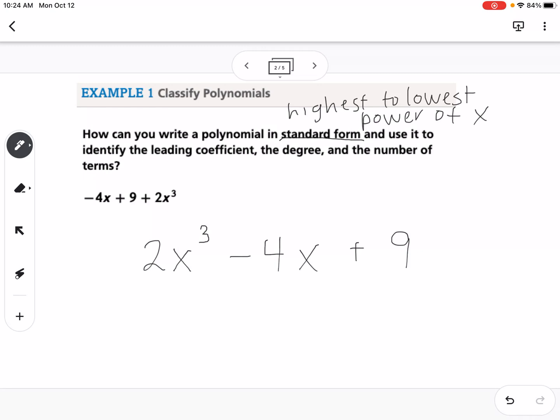So the other things we need to talk about are leading coefficient, so I'll use different colors here. So the leading coefficient is the coefficient that is with your highest power of x, so that will be 2. 2 is our leading coefficient in this problem.